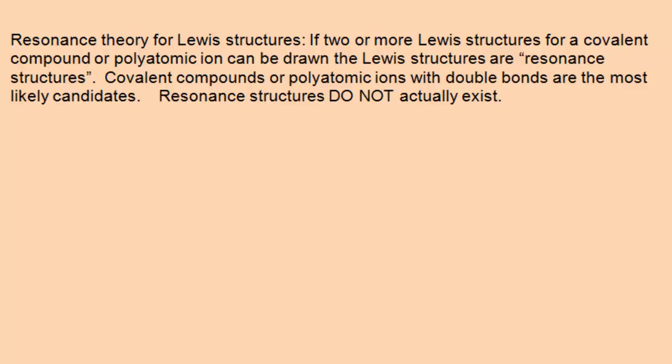If two or more Lewis structures for a covalent compound or polyatomic ion can be drawn, those Lewis structures are so-called resonance structures. Covalent compounds or polyatomic ions with double bonds are the most likely candidates.